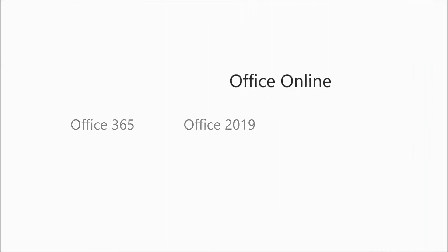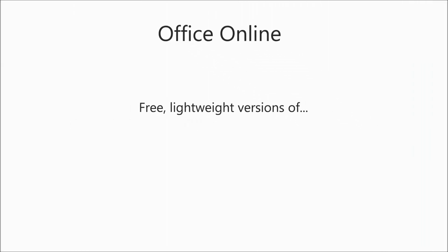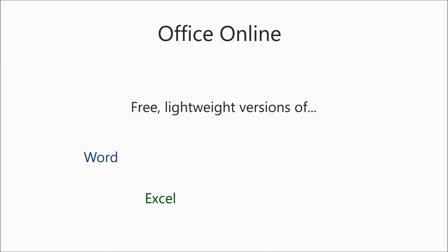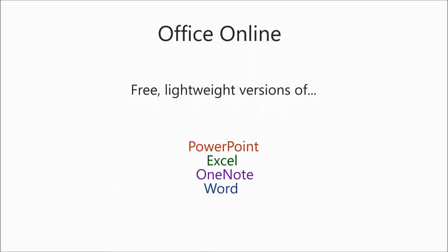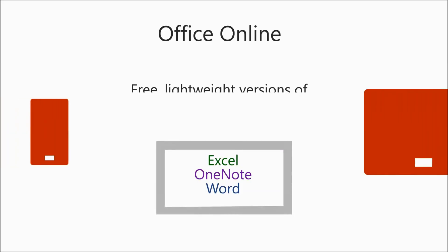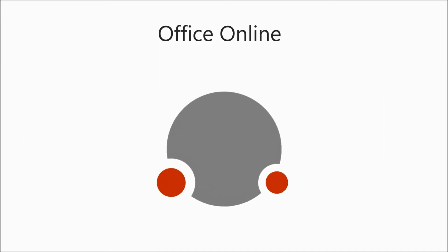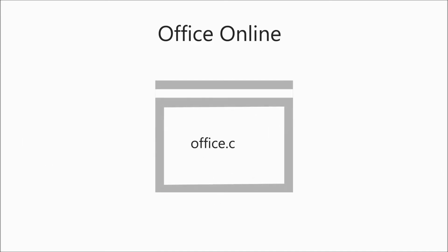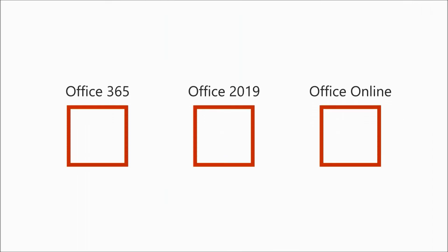Finally, there's Office Online — free, lightweight versions of Word, Excel, PowerPoint, OneNote, and more that anyone can use from a browser. This means you can open files on devices that don't have Office installed, and you can even collaborate with someone who doesn't own Office. Just sign in at office.com to get started. So, three versions of Office — which will you choose?